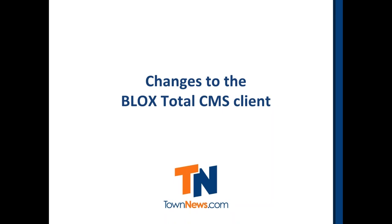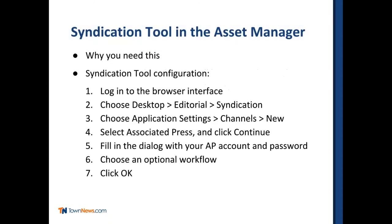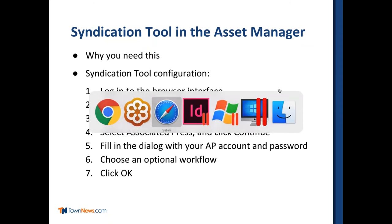Changes to the client — this is what we're here for today. Big-ticket items that have changed in the Blocks CMS client for InDesign. The first thing we're going to talk about is using the syndication tool in the asset manager. With the appliance update 2018, we will be removing the ability to run the AP Web Feed Agent off of the appliance. If you installed your system more than about three years ago, you would have been using the AP Web Feed Agent, and that's going away. You have two choices: switch to the syndication tool — the preferred method, it's free and very quick — or get your own dedicated PC to run the agent. We recommend the syndication tool.